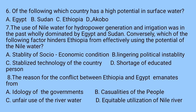Question number six: Of the following, which country has a high potential in surface water? a) Egypt, b) Sudan, c) Ethiopia, d) Akobo.